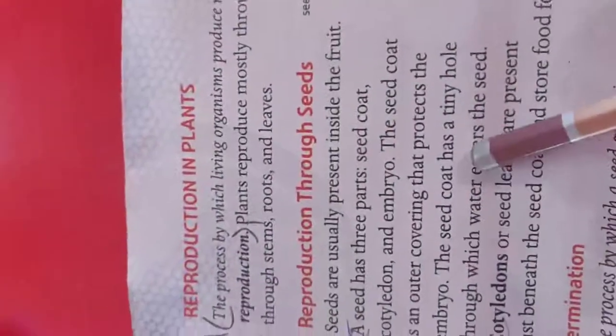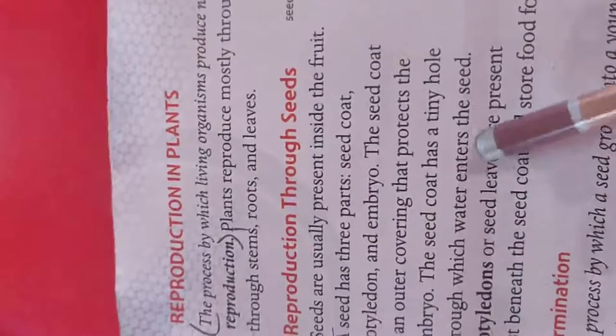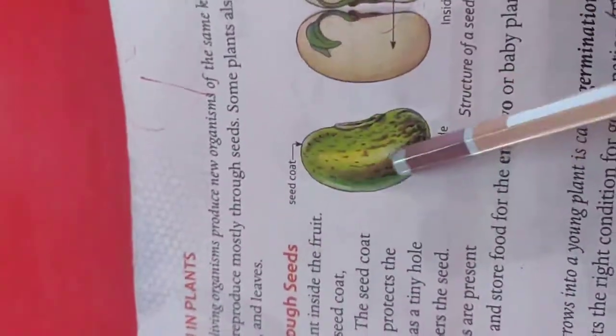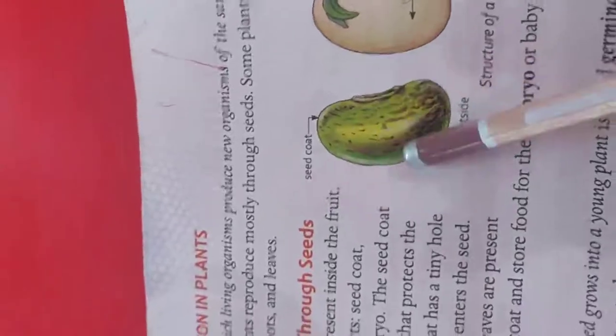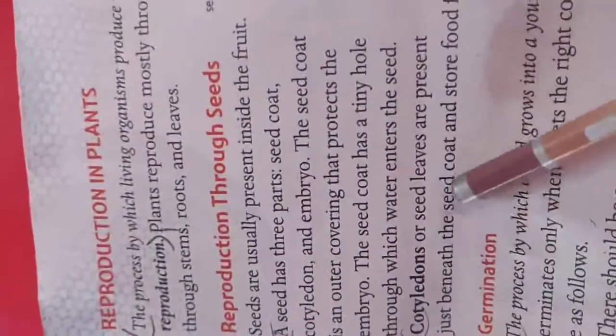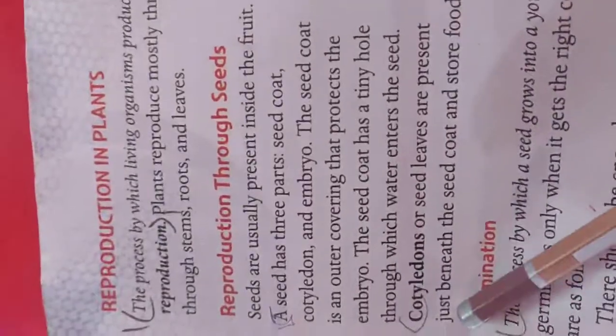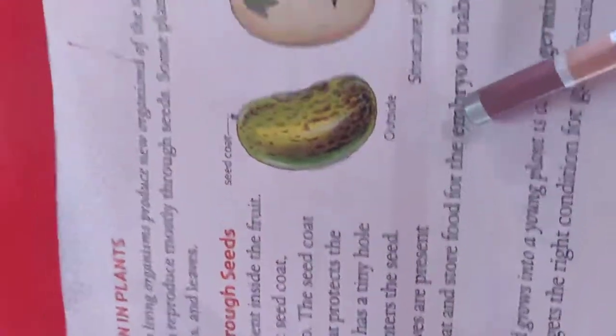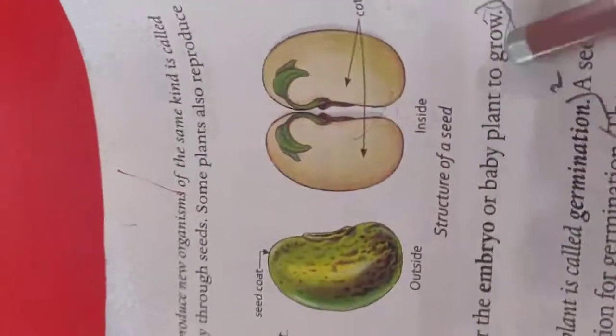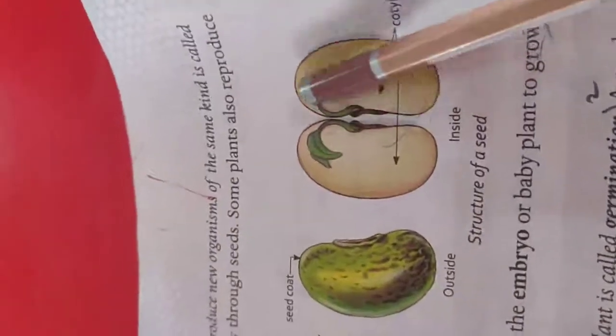Seed coat has a tiny hole through which water enters the seeds. Cotyledon or seed leaves are present just beneath the seed coat and store food for the embryo of the baby plant to grow.